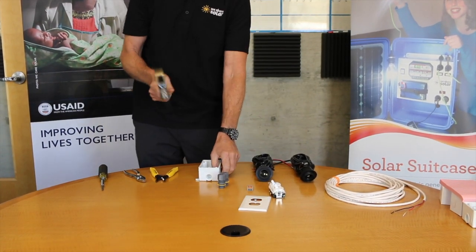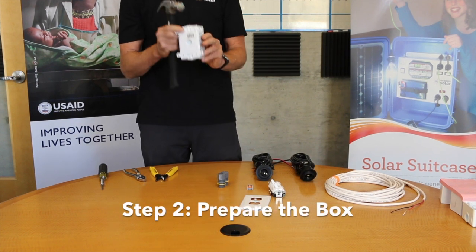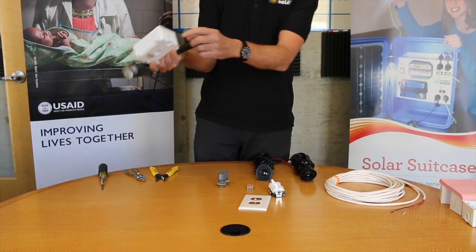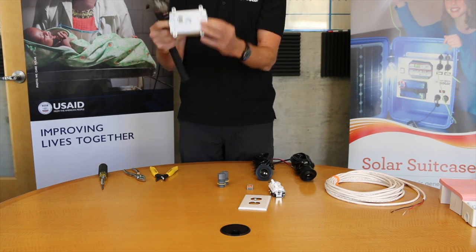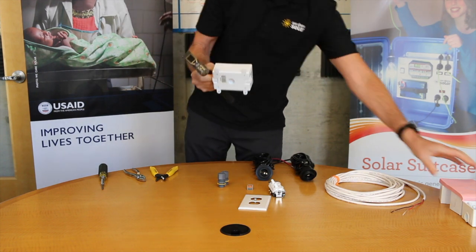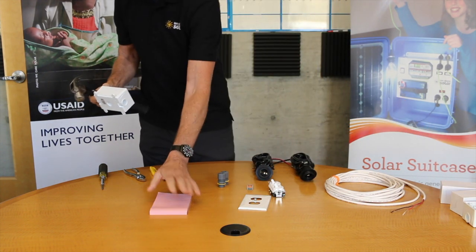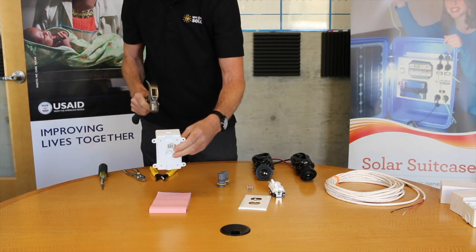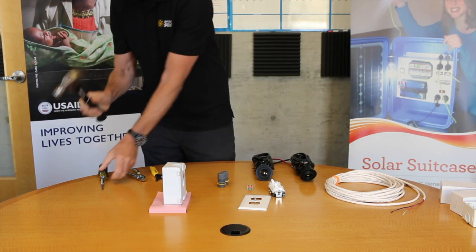Step one, or actually this is step two in the book, is we're going to knock out the knockouts. We're only going to knock out the top and the bottom, not the back knockout. So I'm going to take something to protect the table, or you can do this on the floor.